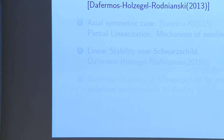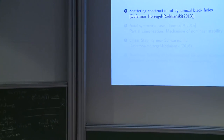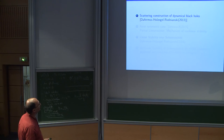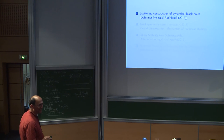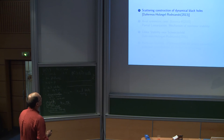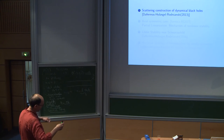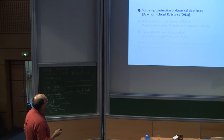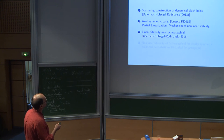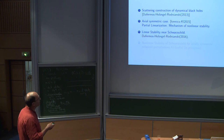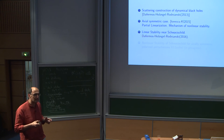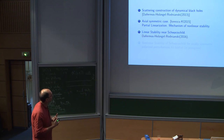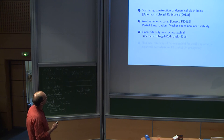Current results: there is a scattering construction of dynamical black holes by Dafermos, Holzegel, and Rodnianski, which means solving the problem from infinity rather than from initial data — much easier but still quite remarkable. There is a result of Ionescu and myself in the axial symmetry case based on partial linearization — something still nonlinear and more relevant than just the wave equation on Kerr. Then there is a remarkable result of Dafermos, Holzegel, and Rodnianski — linear stability near Schwarzschild — which appeared at the beginning of the year.